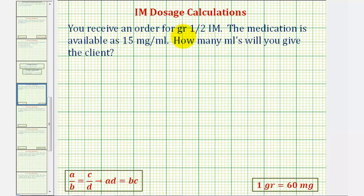You receive an order for one-half grain IM. The medication is available as 15 milligrams per mil. How many milliliters will you give the client?